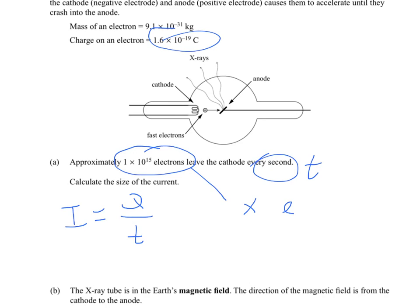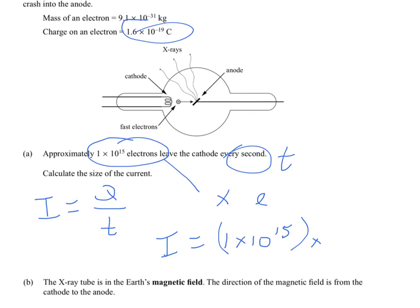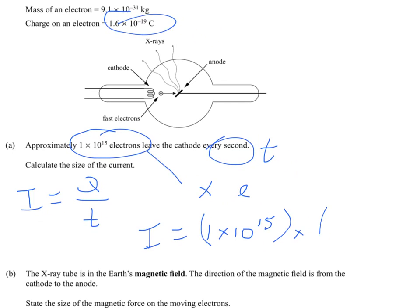So I'm not going to do the full calculation, but the full mathematical formula you would use would be that the current equals 1 times 10 to the 15, that's a lot of electrons, times by 1.6 times 10 to the minus 19 coulombs per electron. And then you would divide it by 1 second, but dividing by 1 isn't going to change the answer.